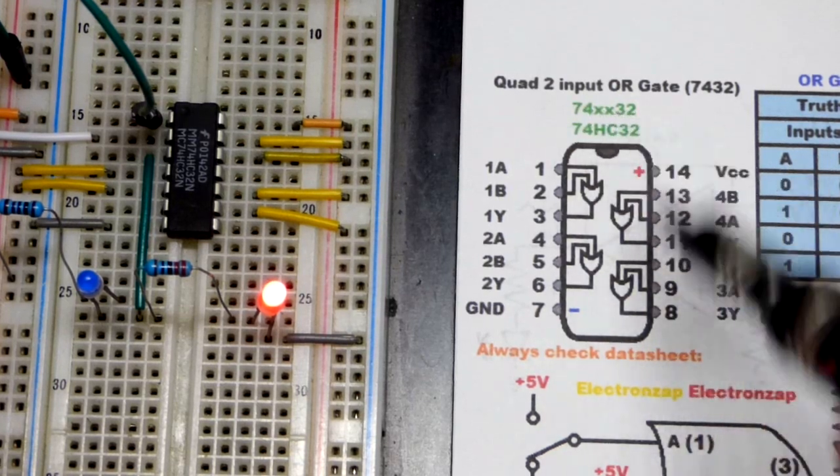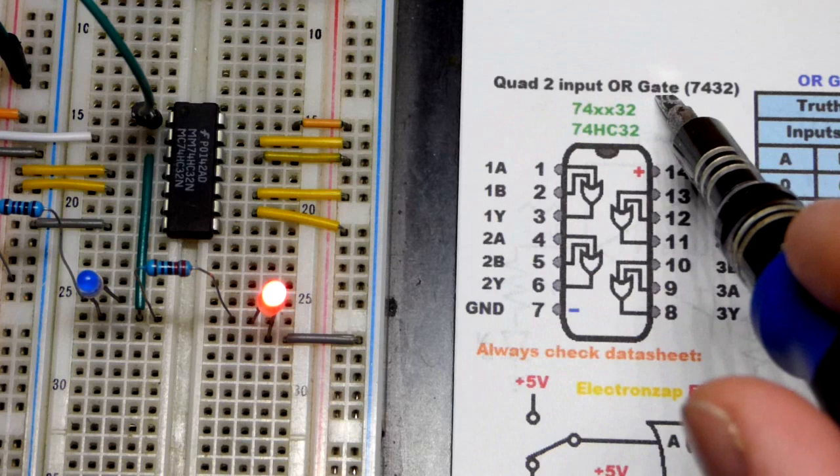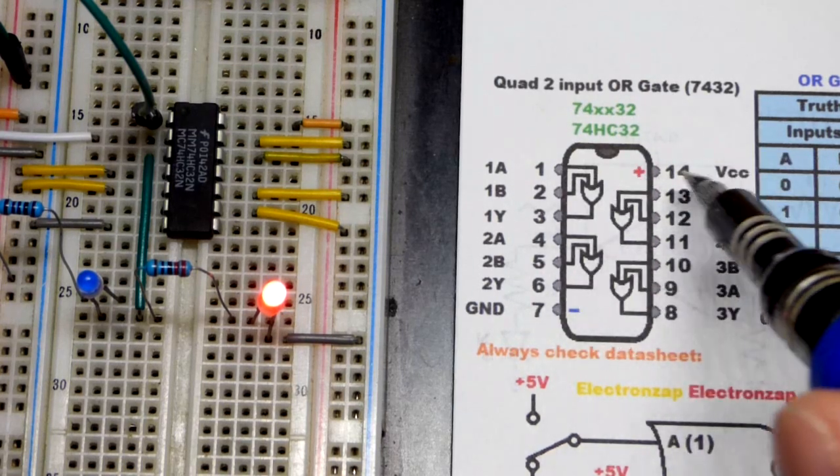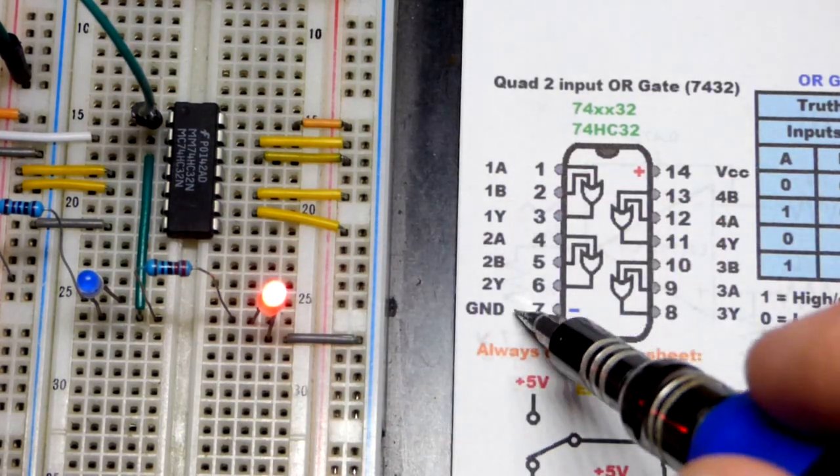So now when you look up the component, I always check the data sheet. On the data sheet, you'll see that it's a quad two input OR gate right there. So we got four OR gates. You got to power it though. Positive supply to pin 14 and negative supply to seven.